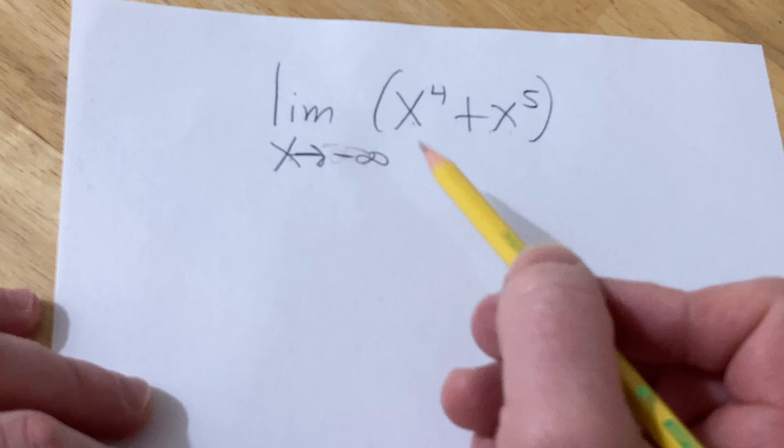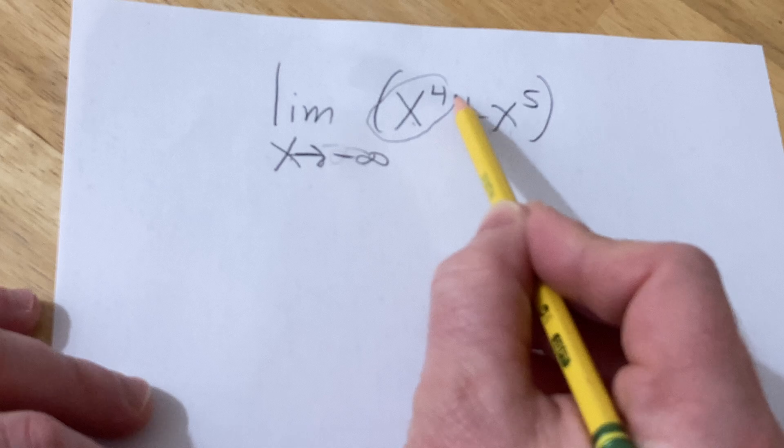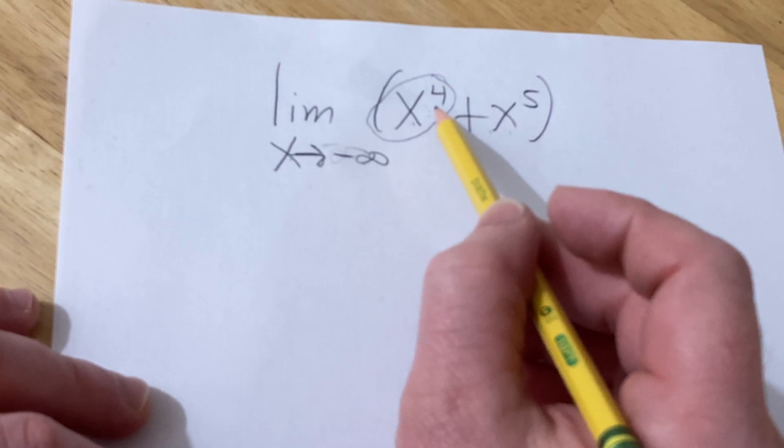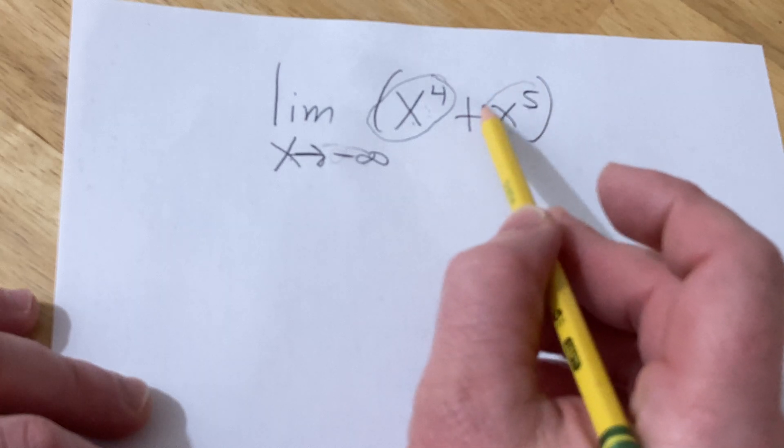Let's just think about what's happening here. So basically, this here is going to be positive, because it's to the even power. This is going to be negative because it's to an odd power, right?